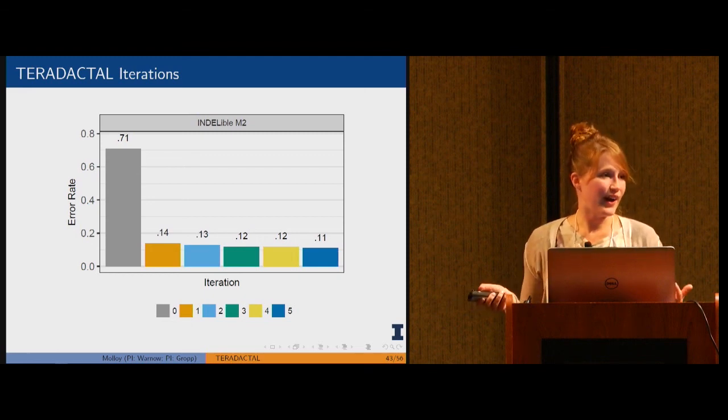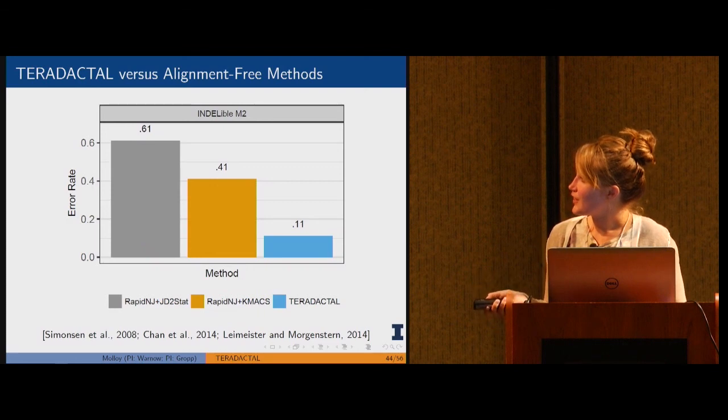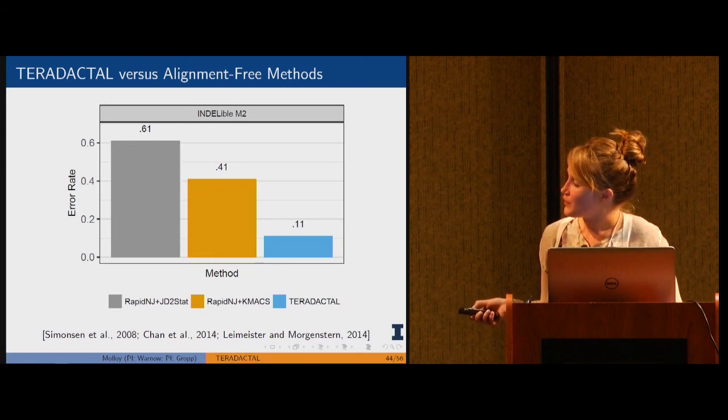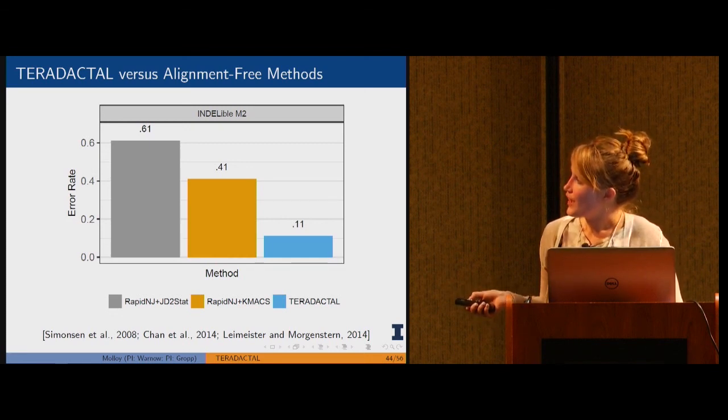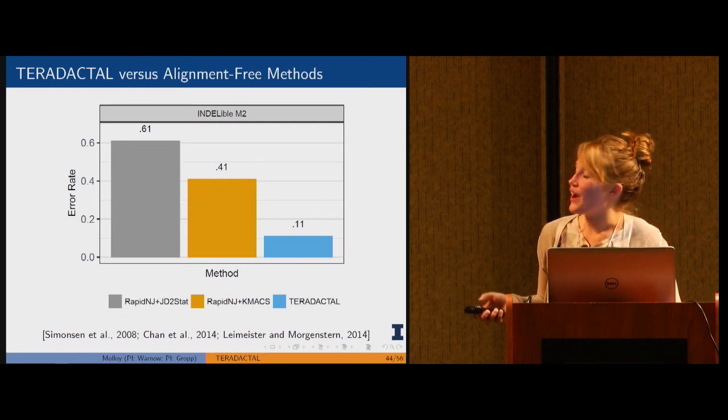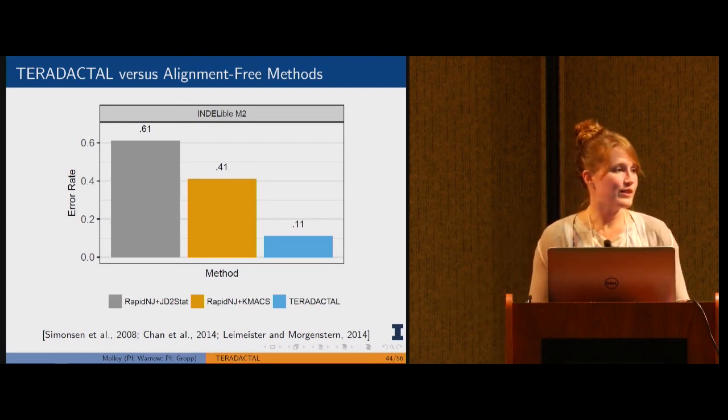If we compare pterodactyl to alignment free methods, these are very fast methods where the alignment free part will give you a distance matrix and then you can run a method like RapidNJ to get a tree. We're seeing that pterodactyl in blue has a lot lower error than the other two methods in orange and gray. Pterodactyl provides a significant improvement over some of these other HPC implementations that are also alignment free.